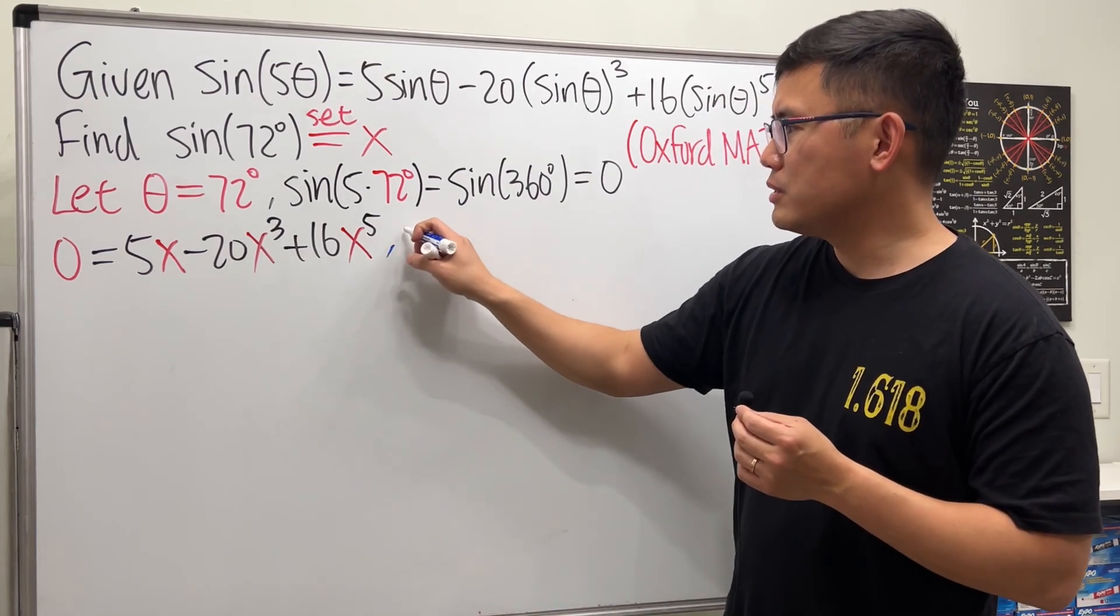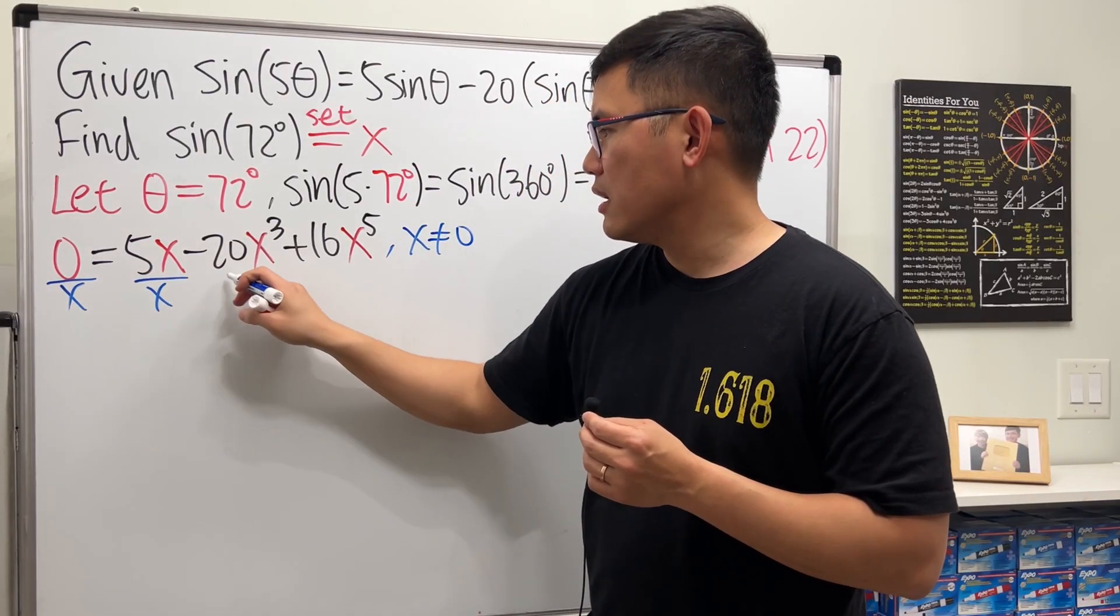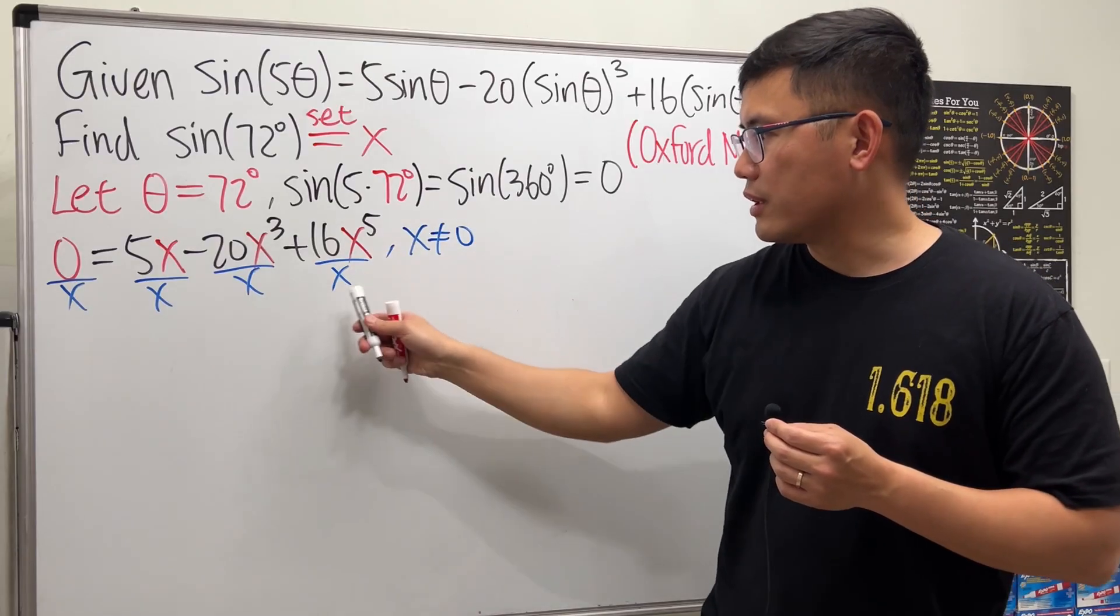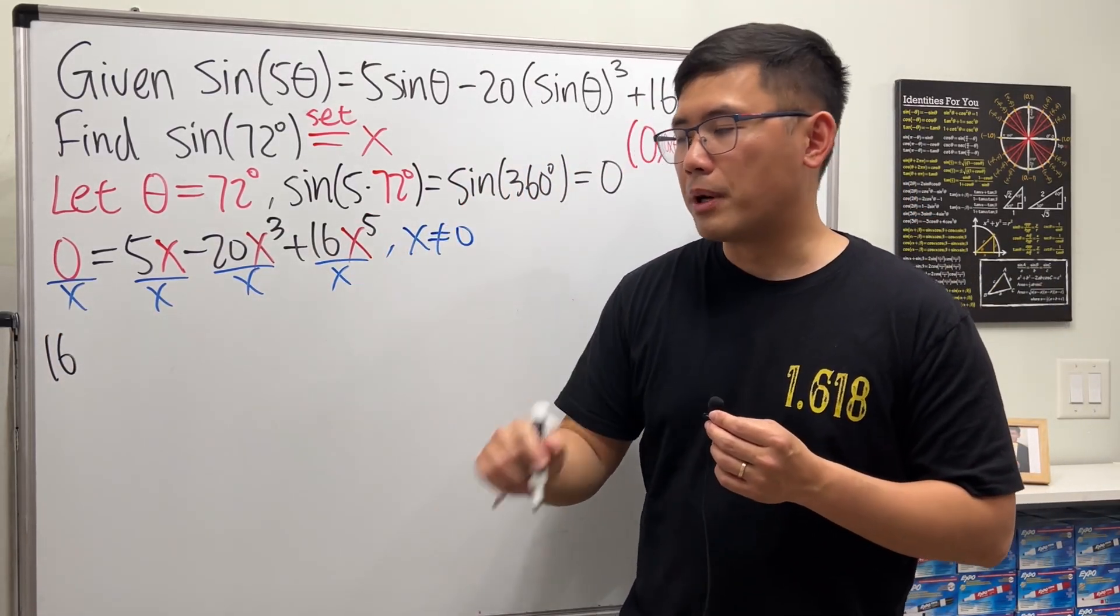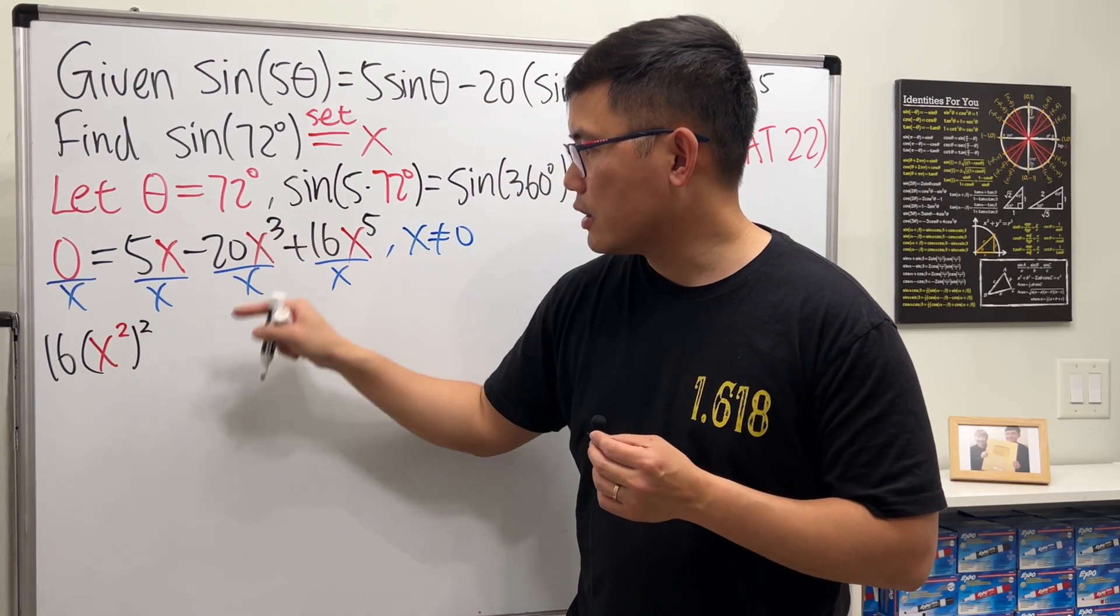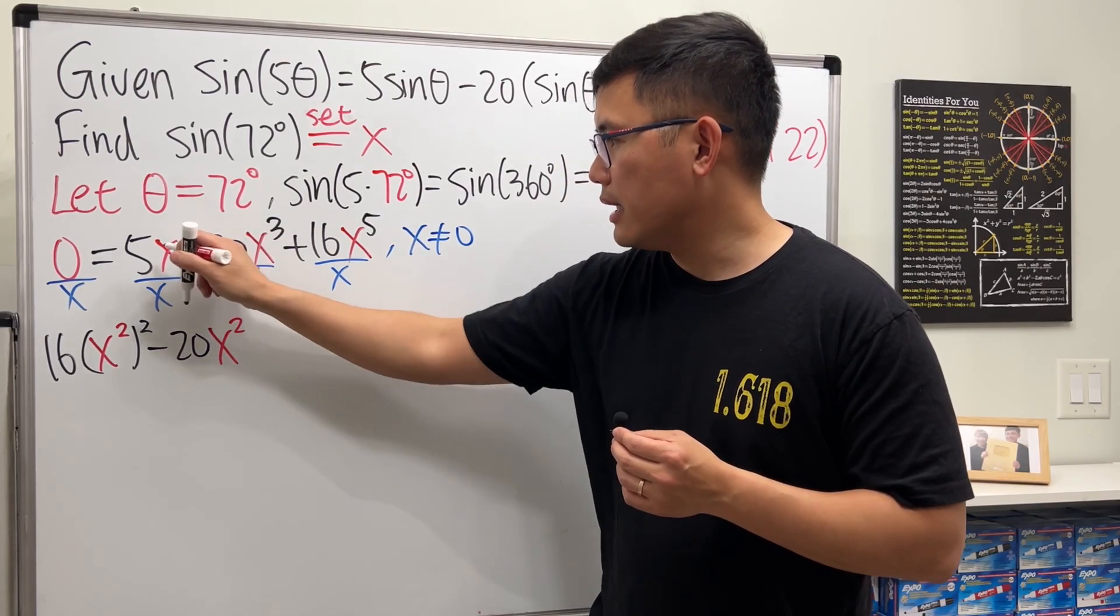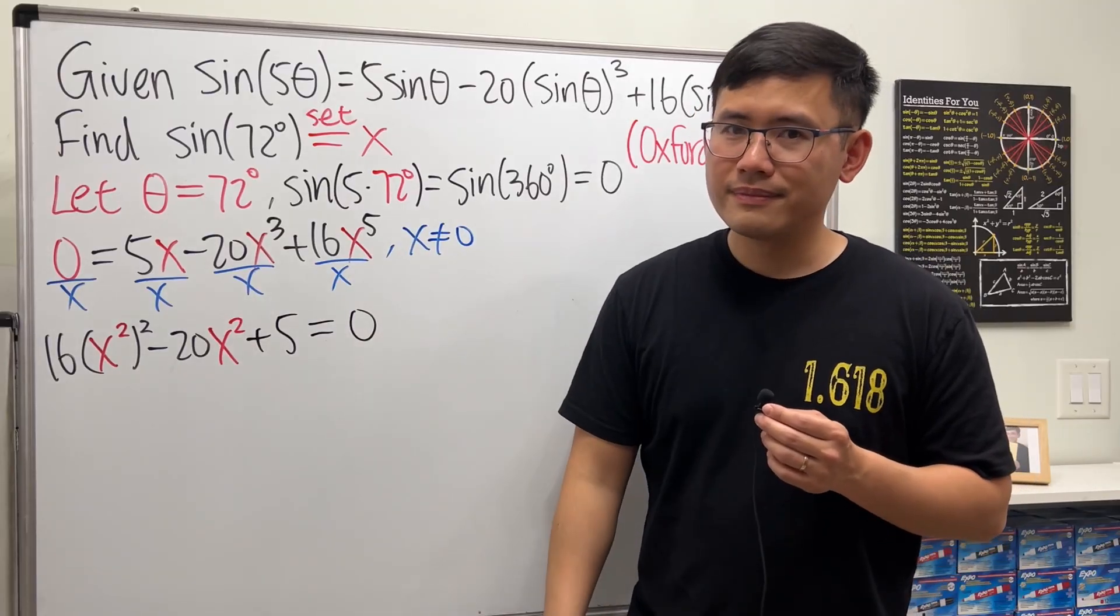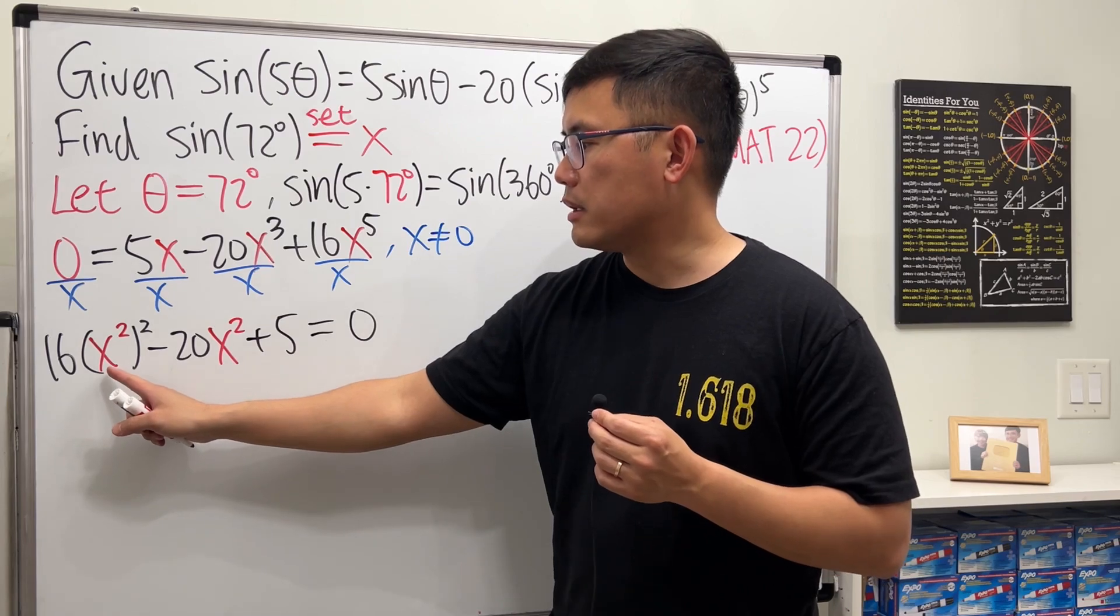And then at the end we have to decide which value is for sine of 72 degrees. Firstly though, we see that sine of 72 degrees cannot be equal to zero, so of course let me just denote that right here. We can just divide everybody here by x, and let me write this down right here: 16x⁴—by our purpose the radius x²²—because the next term is minus 20x², and then this right here is just plus 5, and that's equal to zero.